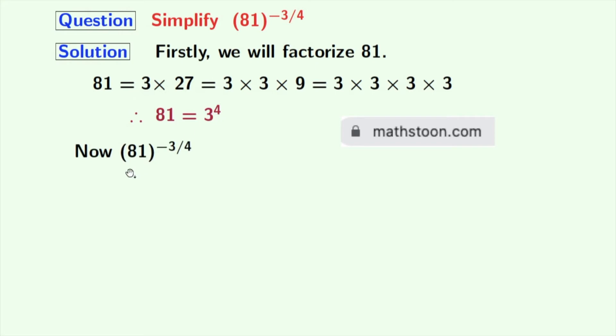Now, our given quantity is 81 to the power minus 3 by 4. Using this fact, we can rewrite this quantity as 3 to the power 4, whole to the power minus 3 by 4.